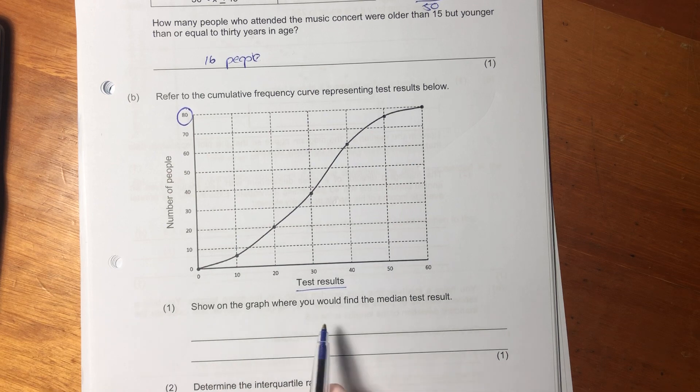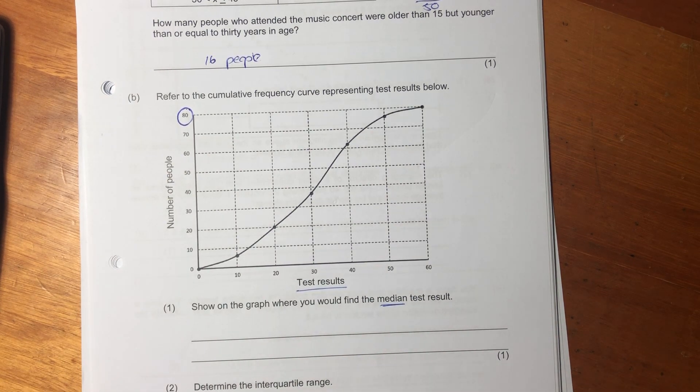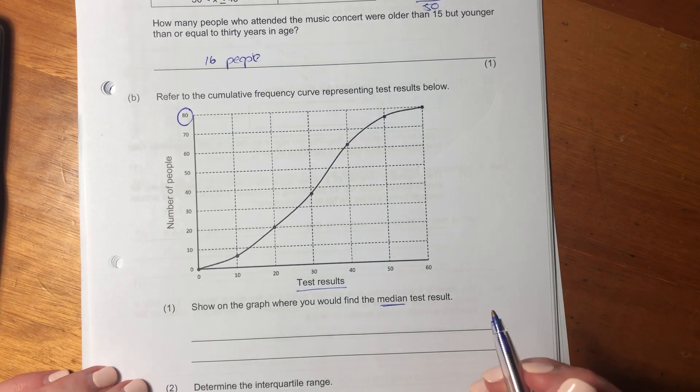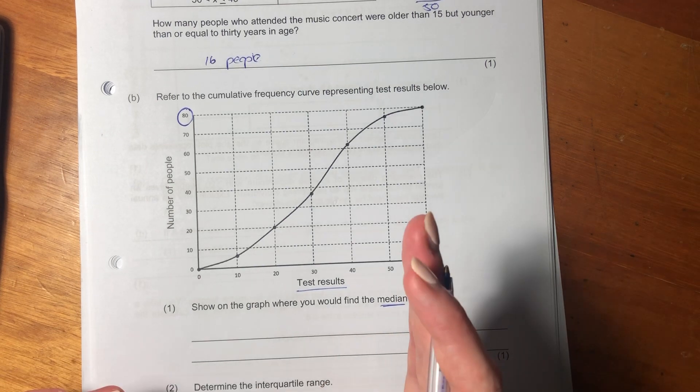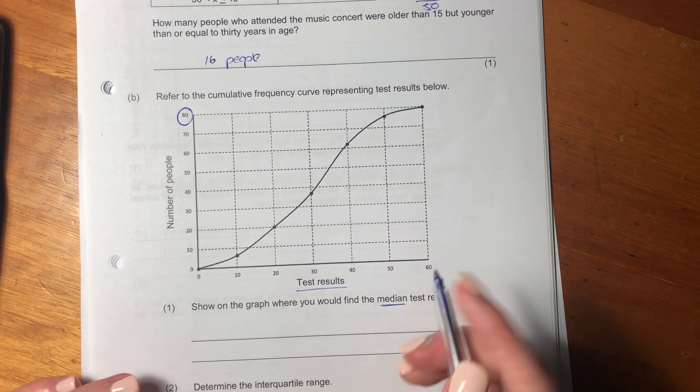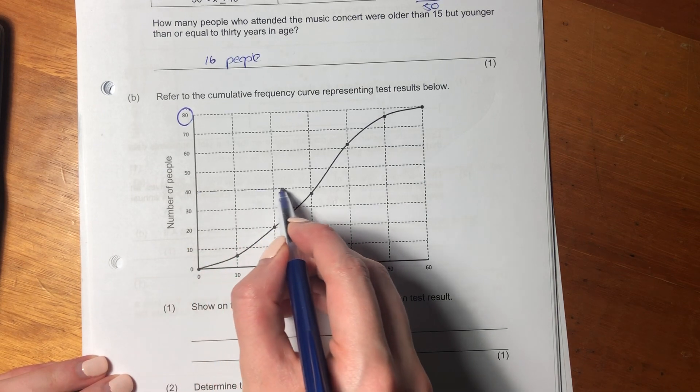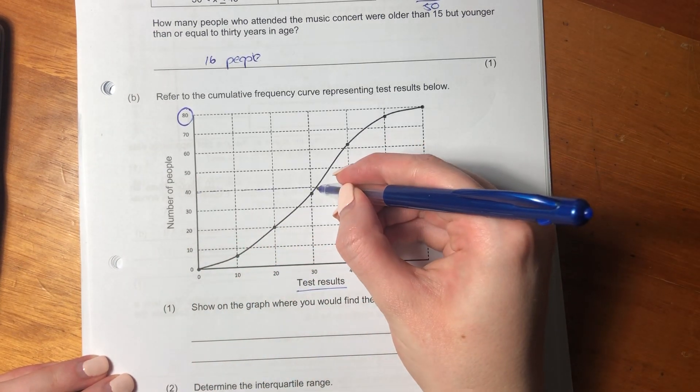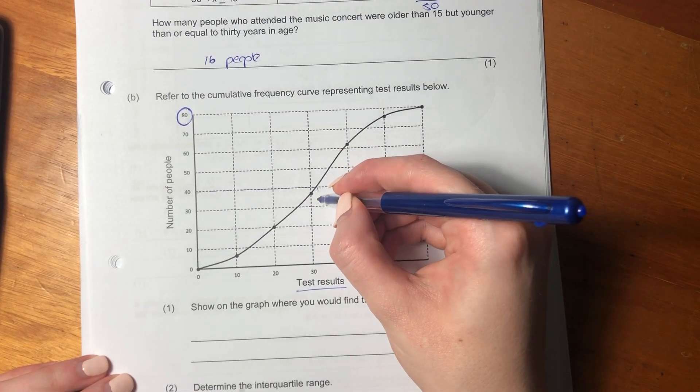It says show on the graph where you would find the median, the middle. The median test result would be the middle test result, which would kind of be where it's 50%. So 50% is going to be where this 40 is, because 40 is halfway through 80, and we want the middle. So that's why we're looking at 40.